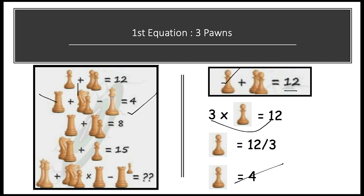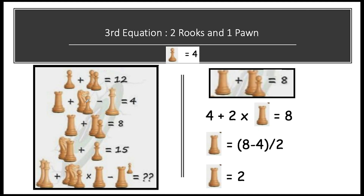In the second equation we have one rook, one knight, one queen, and one pawn — but we only know the pawn's value so far, so we'll consider that equation later. Moving directly to the third equation.